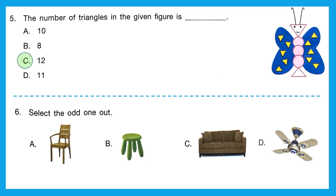Question 6: Select the odd one out. A is Chair, B is Table, C is Sofa, and D is Fan. A, B, and C have one common thing — they do not run on electricity. Whereas D, the fan, runs on electricity. So D would be the odd one out and is the right answer.